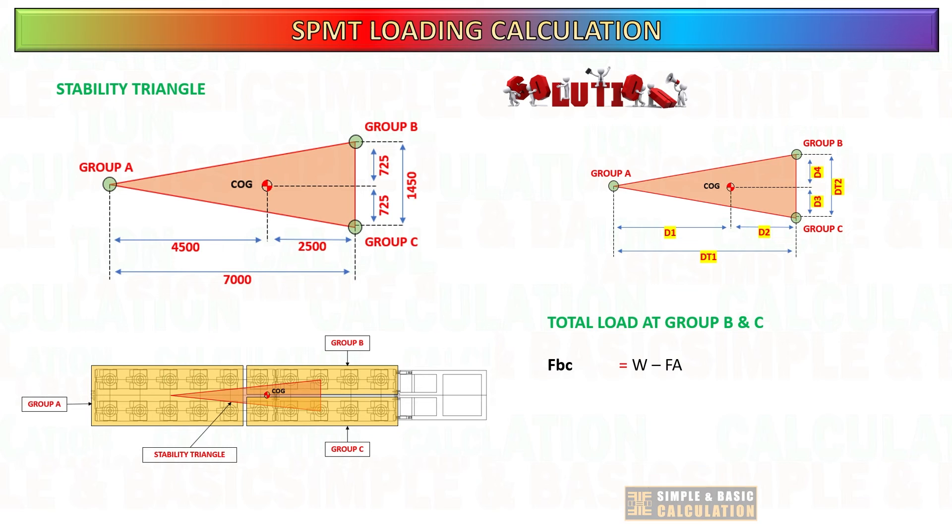The next step is to compute the loading for groups B and C. First things first, let's get the share loading for groups B and C: total weight of the cargo minus load at group A.